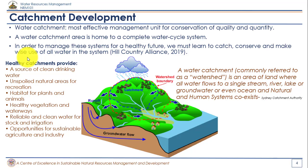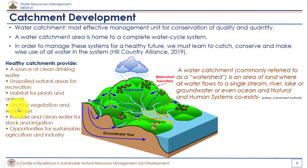The benefits of a healthy catchment include a very good source of clean drinking water, unspoiled natural areas for recreation, and aesthetically beautiful environments — for example, a well-managed catchment area like the Pubgica or Ganti Pubg area is one of the most beautiful unspoiled areas, which is a sign of healthy catchment. It also provides habitats for plants and animals, healthy vegetation and waterways, reliable and clean water for livestock and irrigation, and opportunities for sustainable agriculture and industry.